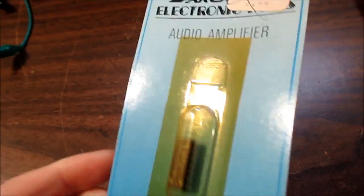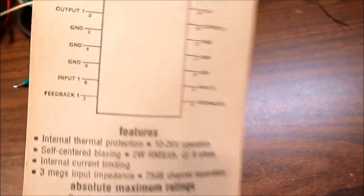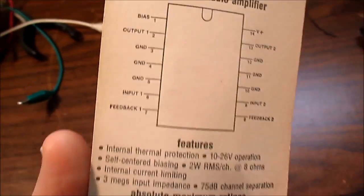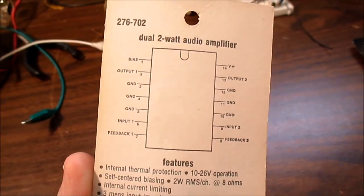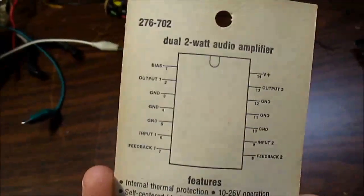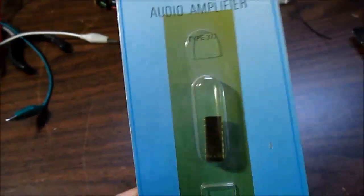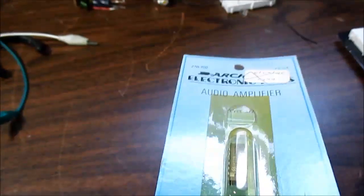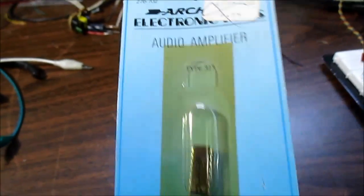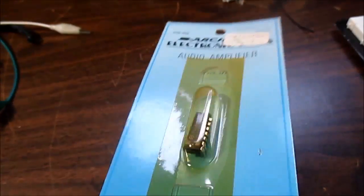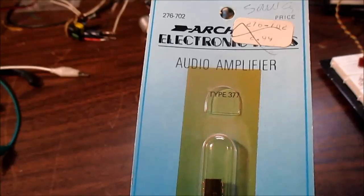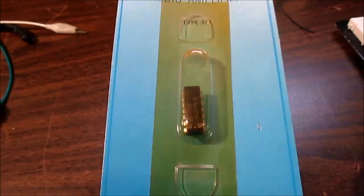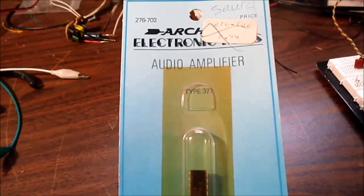This is the LM1877 Dual Channel Audio Amplifier IC. You can make a stereo amplifier with this thing. A friend gave these to me. I was up at his place and he got these years ago and he had no use for them, so he gave me a few of them.